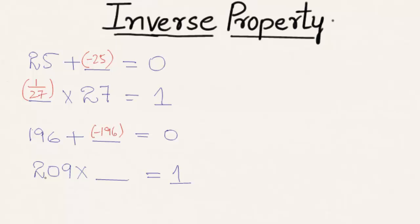In the fourth example, 209 is multiplied with its reciprocal 1/209 to get the multiplicative identity 1. So this was the basic introduction on inverse property. Hope you understood the concept. Do like and subscribe to vteachacademy.com.